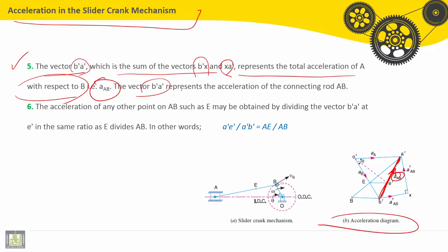This vector B-A-dash (this is A-AB) represents the acceleration of the connecting rod A-B.